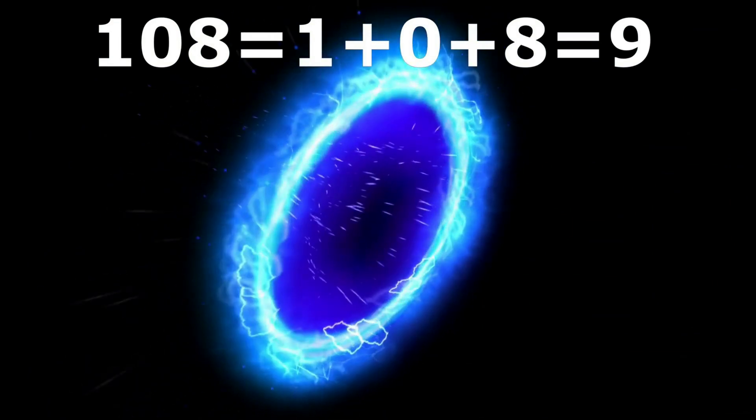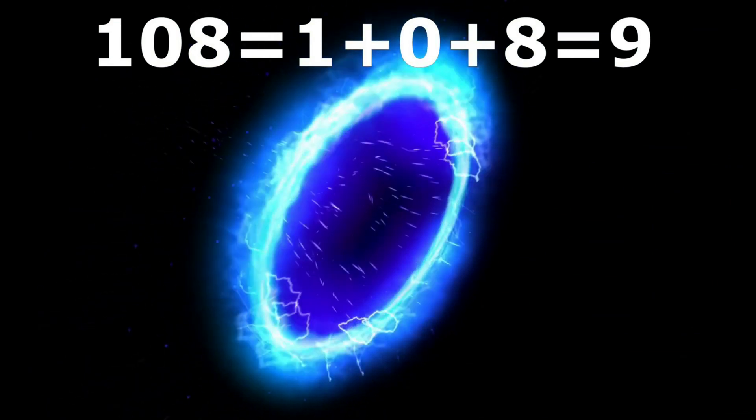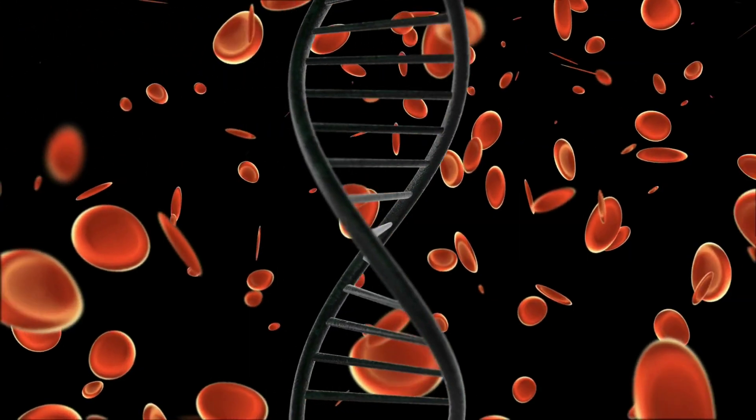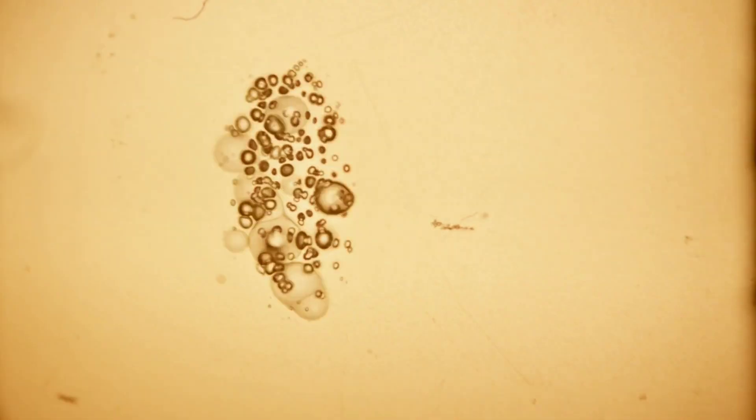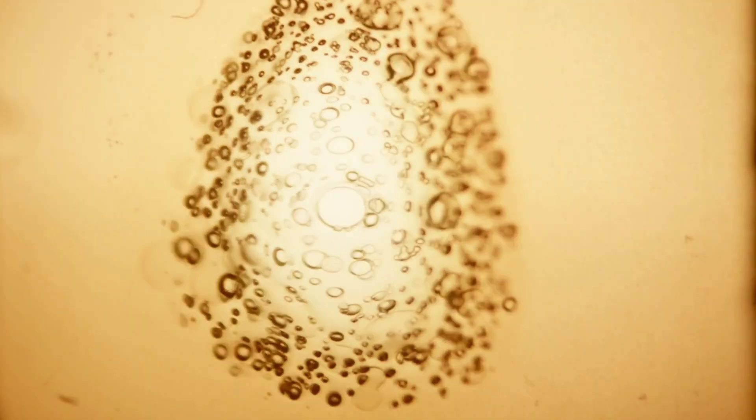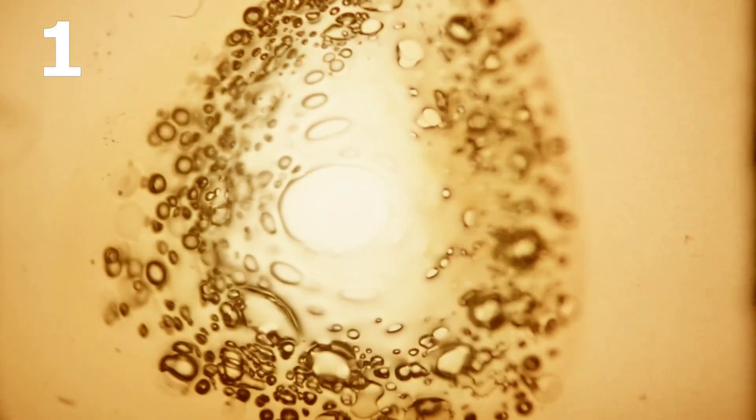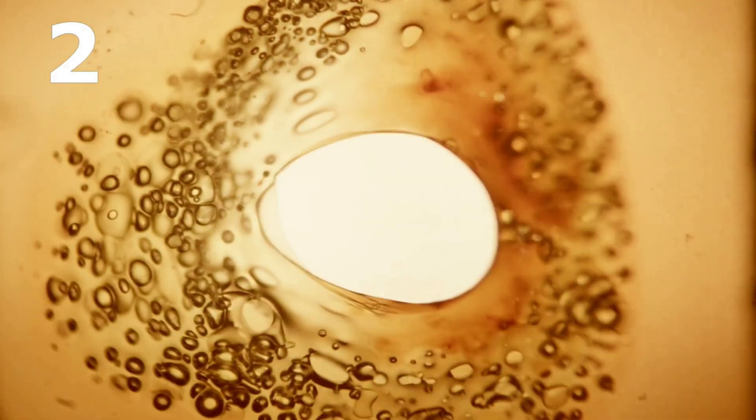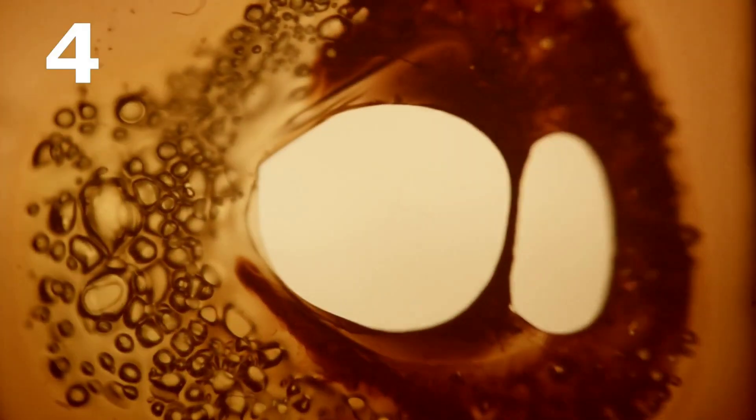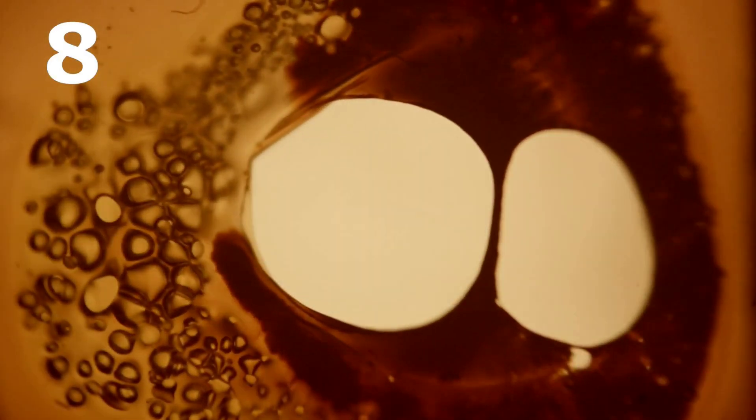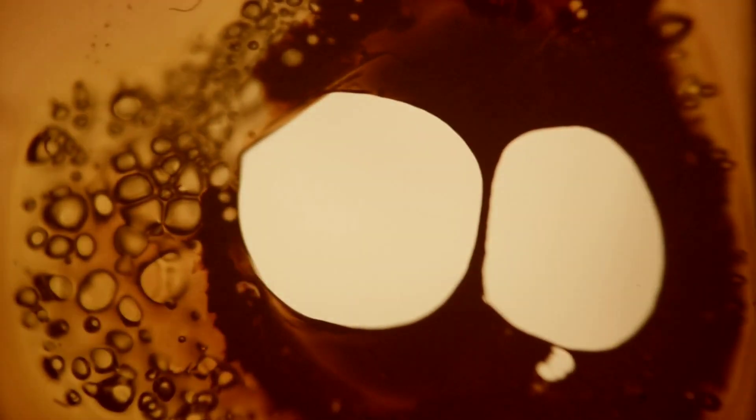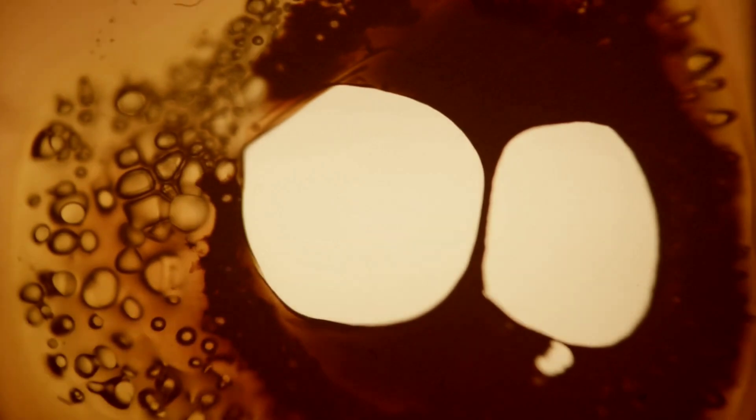All the living things in this world are made up of cells. Multicellular organisms are formed by the division of a single cell. A single cell divides into two cells, then after division of both cells we get four cells. Then 8, 16, 32, 64 and 128 cells are produced.